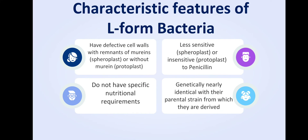The characteristic features of L-form bacteria include: defective cell walls with remnants of murein, as seen in spheroplasts which are gram-negative bacteria, and without murein as in protoplasts. They are sensitive to penicillin — spheroplasts are less sensitive, while protoplasts are nearly insensitive to penicillin. They do not have specific nutritional requirements and are genetically nearly identical to their parental strain.